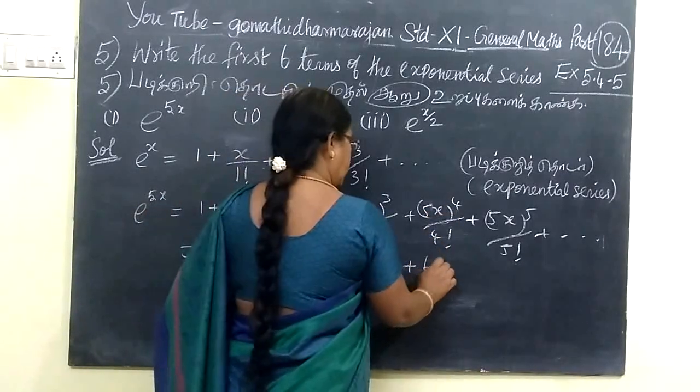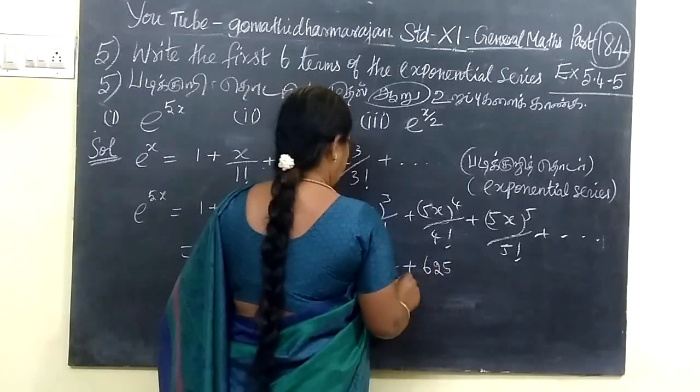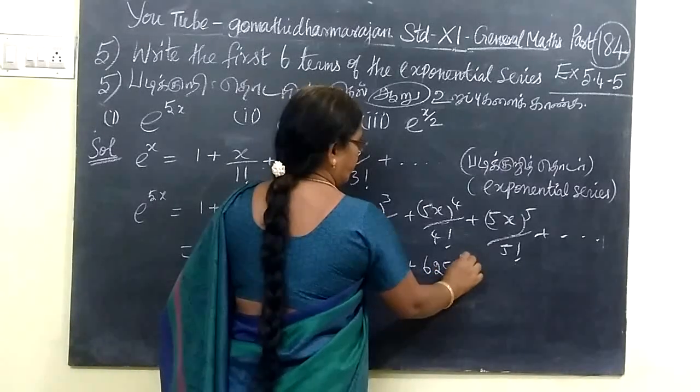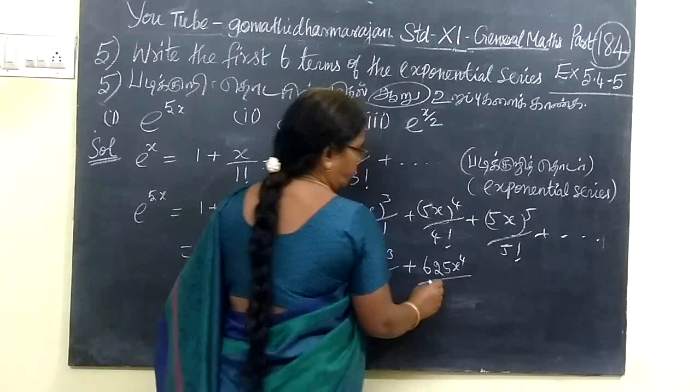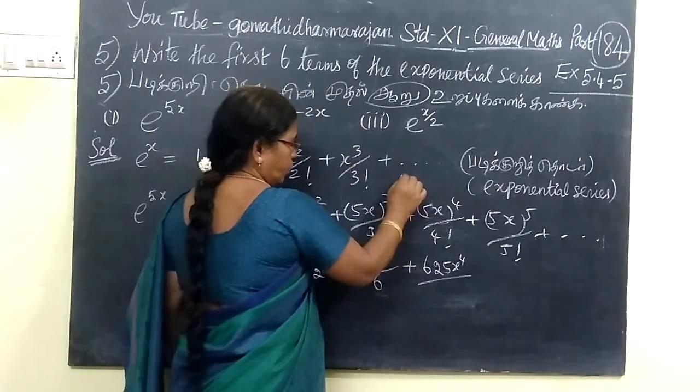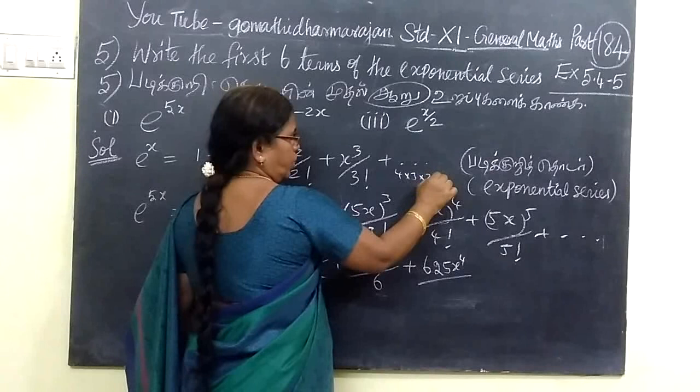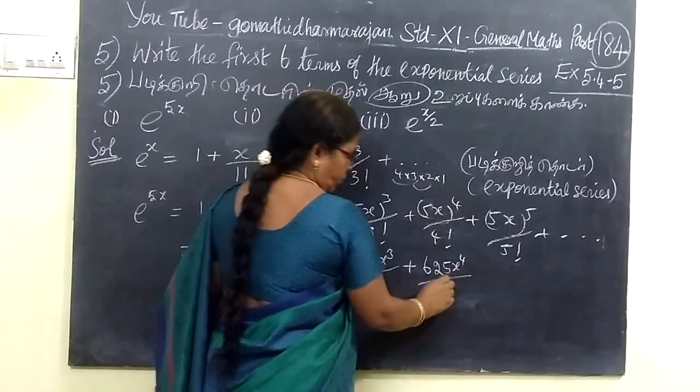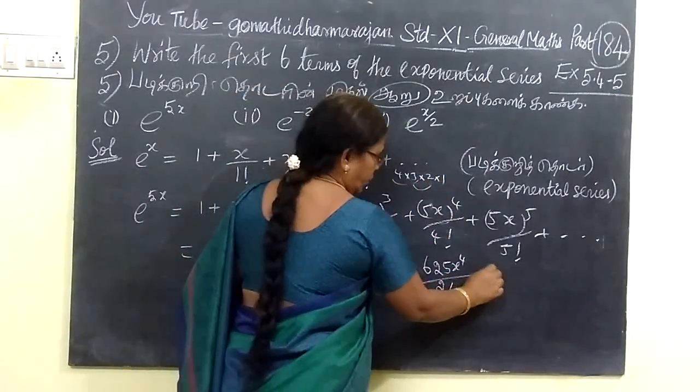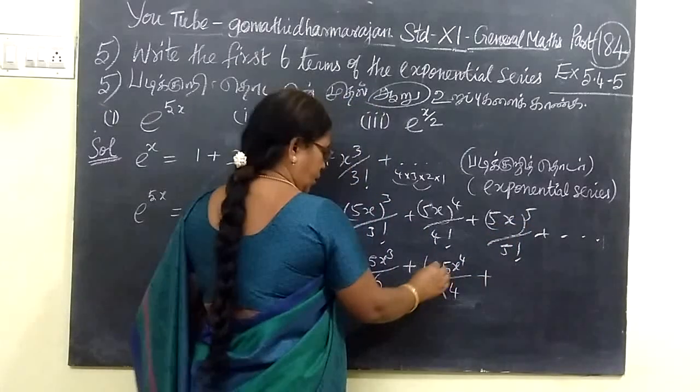Then 5x cubed. Then x to the fourth. Then factorial 4 means 24, which is 4 into 3 into 2 into 1. So, 24. Then 5 to the fifth.